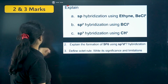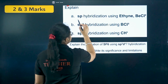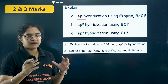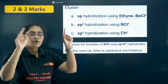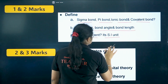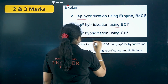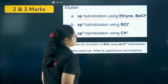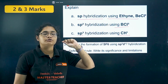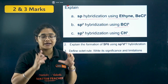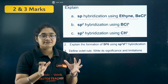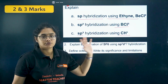Now moving to two and three marker questions: SP hybridization using ethyne and BeCl2 — how to explain it, what things you need to write, what diagrams you need to draw — you should focus on that. SP2 hybridization using BCl3, and SP3 hybridization using CH4 — the diagrams and the content you need to write. Which orbitals are undergoing hybridization, how many new hybrid orbitals are formed — you should know how to frame the answer.